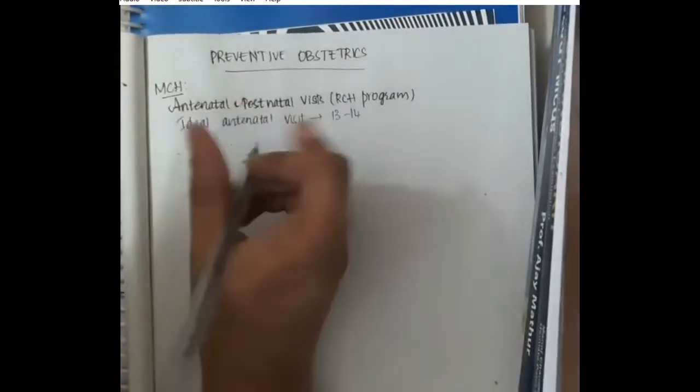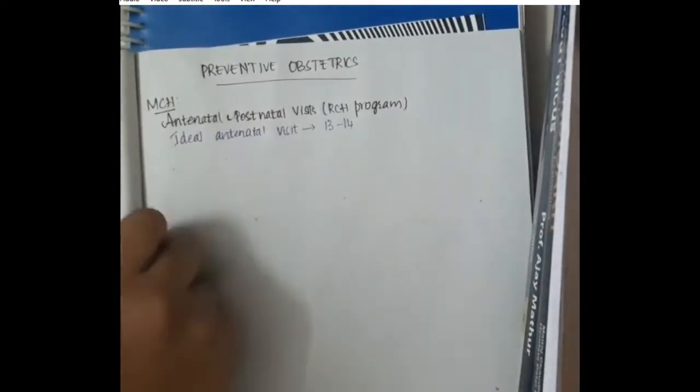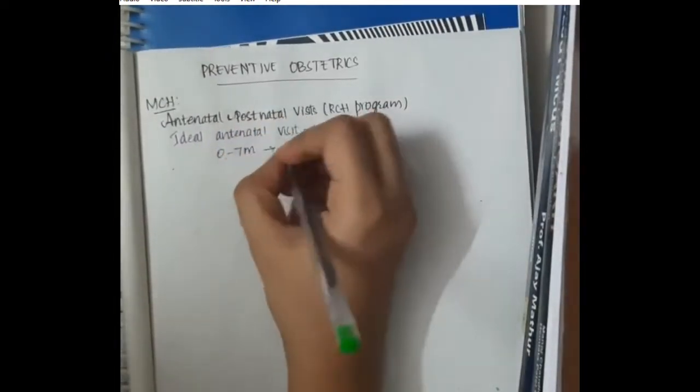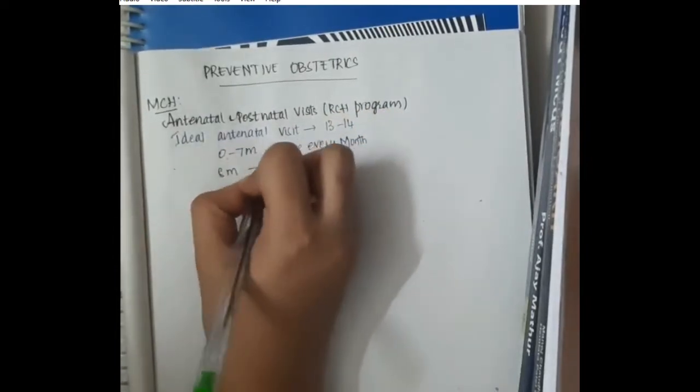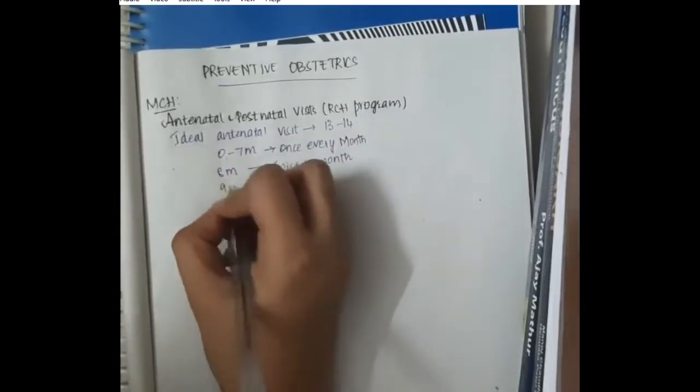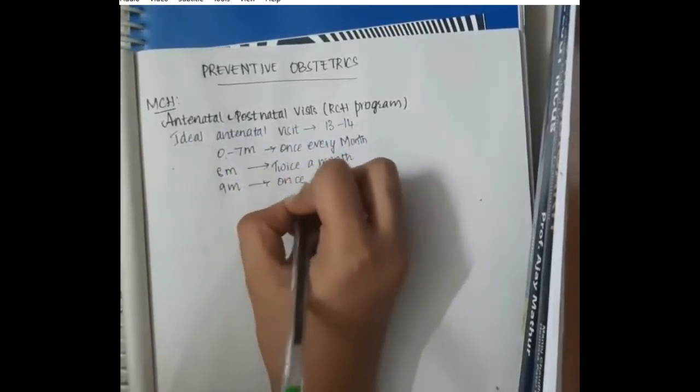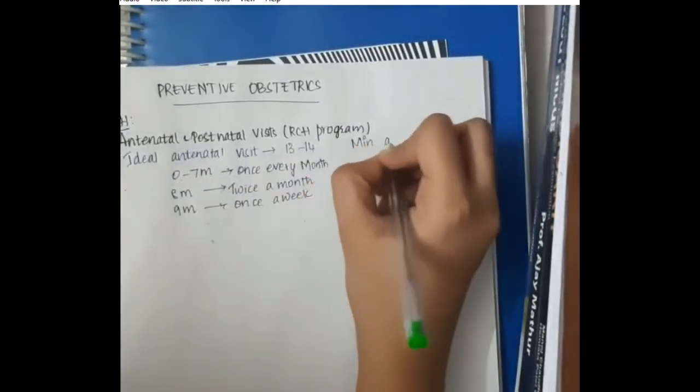This is divided into different months. In ideal antenatal visits, 13 to 14, from 0 to 7 months, the antenatal visit should be once every month. In the 8th month, it should be twice every month or once fortnightly. In the 9th month, it should be once a week. That is ideal antenatal visits.